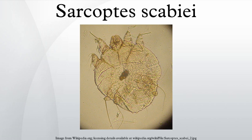Adult mites then mate when the male penetrates the molting pouch of the female. Mating occurs only once, as that one event leaves the female fertile for the rest of her life. The impregnated female then leaves the molting pouch in search of a suitable location for a permanent burrow. Once a site is found, the female creates her characteristic S-shaped burrow, laying eggs in the process. The female will continue lengthening her burrow and laying eggs for the duration of her life.